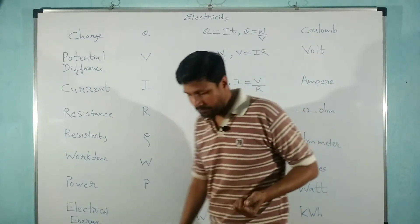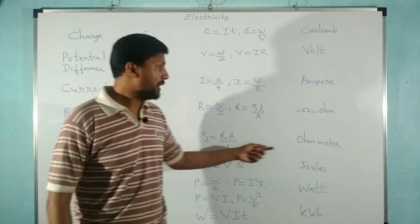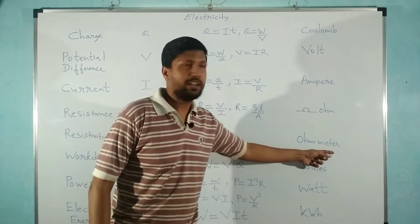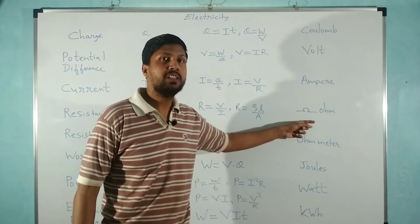The unit of resistivity is ohm meter, whereas the unit of resistance is just ohm.